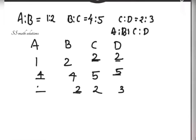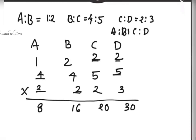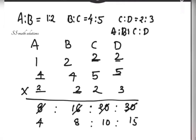Now we fill the empty places: nearest numbers are 2, 2, 4, 5, and 2 again. Now we multiply: 1 into 4 is 4, 4 into 2 is 8. 2 into 4 is 8, 8 into 2 is 16. 2 into 5 is 10, 10 into 2 is 20. 2 into 5 is 10, 10 into 3 is 30. The common factor everywhere is 2, so dividing: we get 4 is to 8 is to 10 is to 15.